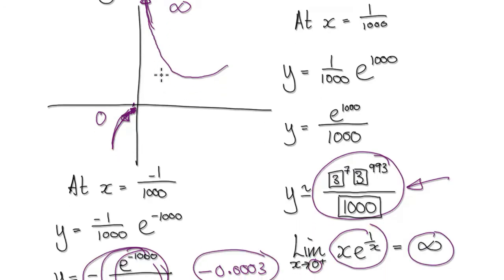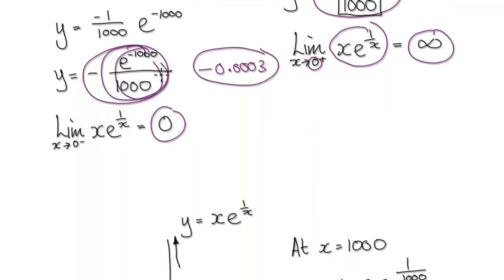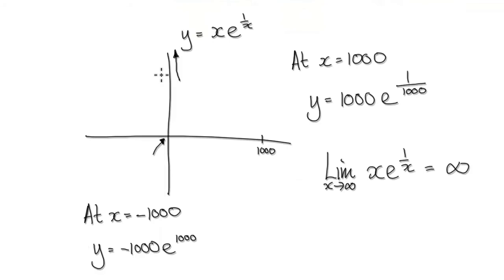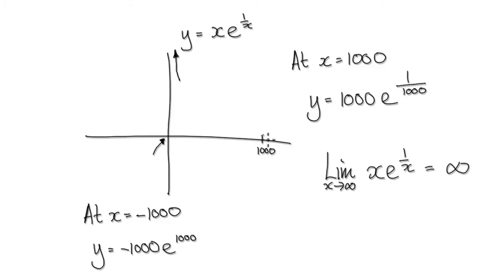So far we know the graph goes very, very big as we approach zero from the right, and heads towards zero as we approach from the left. We will continue in the next video, where we need to investigate what happens when x is very, very large and when x is very, very negative.